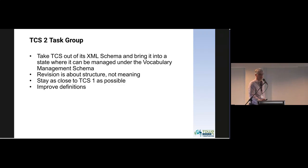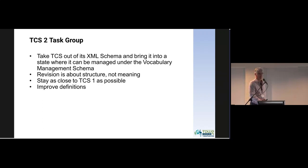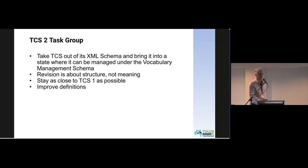TCS, or the Taxon Concept Schema, is a TDWG standard for exchanging taxonomic data. It's one of a group of standards from 2005, together with ABCD and SDD, which are based on XML schema.